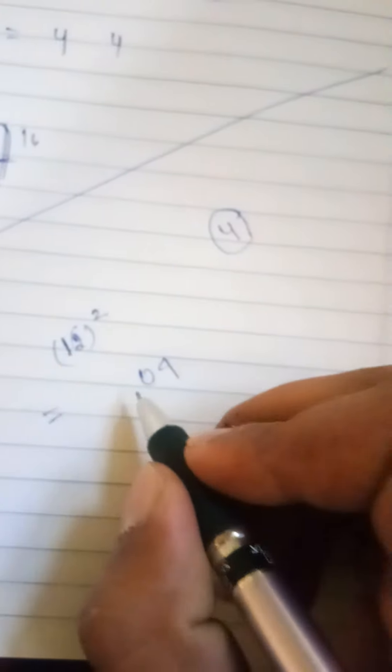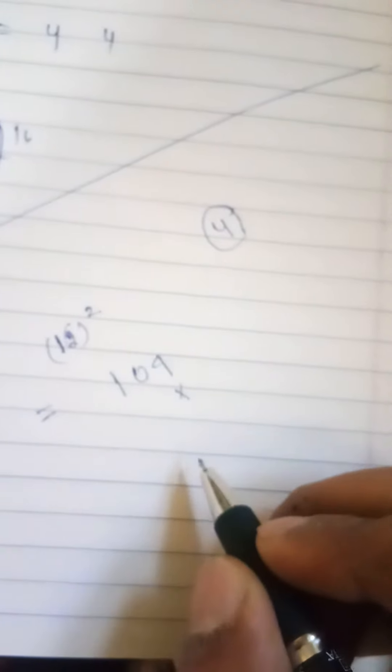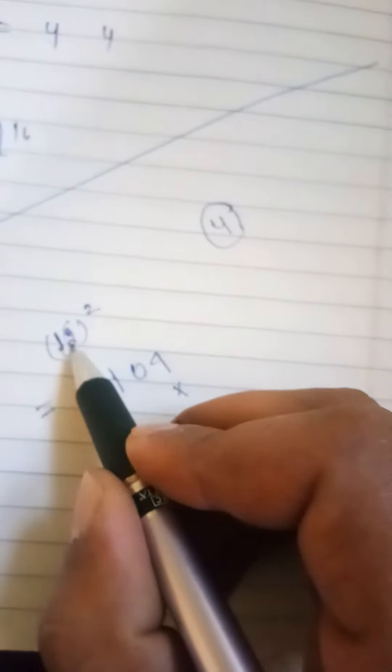Then one squared is simply one. Then one to the two to the four, write it down here. Then it is four. Four and one here. I see the number, I'm just taking 25.